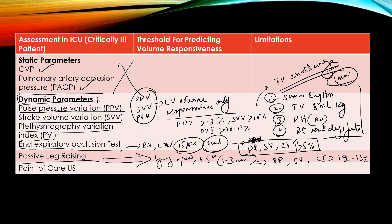Our last test is point-of-care ultrasound. You will look at the inferior vena cava — an IVC variation of greater than 50% with respiration indicates volume responsiveness. This was our topic for today. Thank you very much, have a nice day.